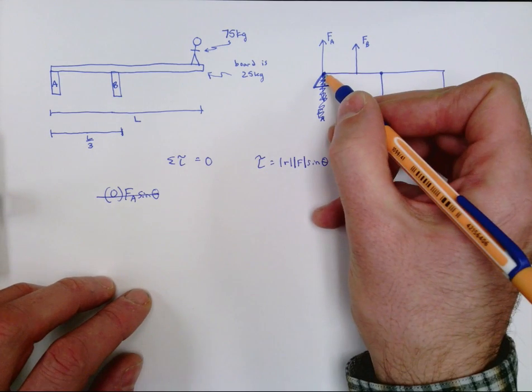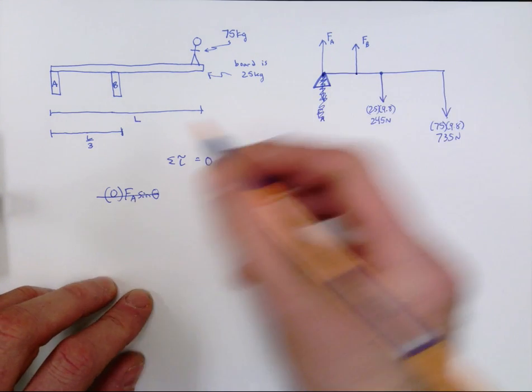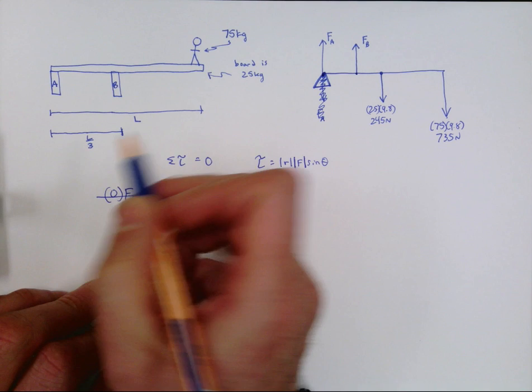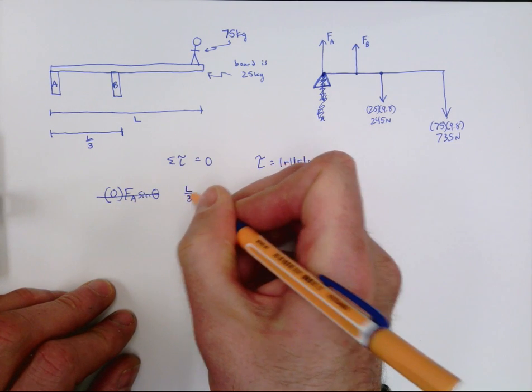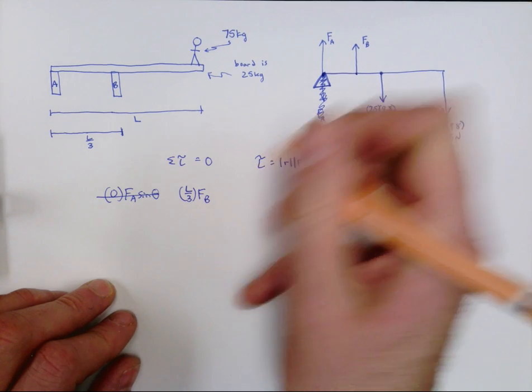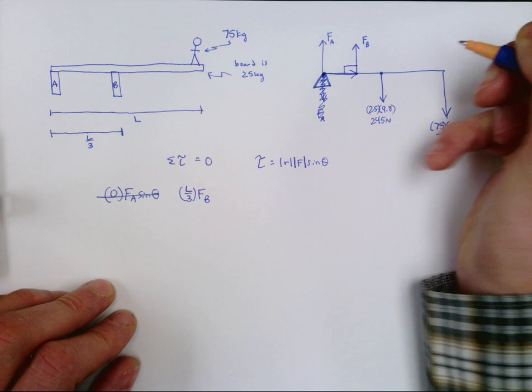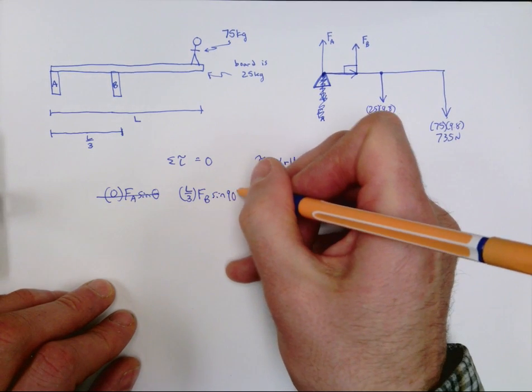Let's go to force B. So how far is force B from the axis of rotation? If we look at the given information here, it's at a distance of L over three. So I'm going to do L over three times force B. And then the angle, it's the angle between the radius and the force. So it's going to be times the sine of 90.